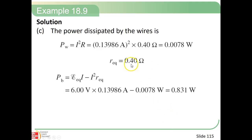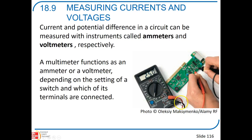The power dissipated by the wires in the second circuit is about 0.078 watts. For the battery, we end up with about 0.831 watts net power supplied. That really is the end of sections 18.7 and 18.8. We'll look at 18.9 next time, where we're going to measure currents and voltages. Thank you.